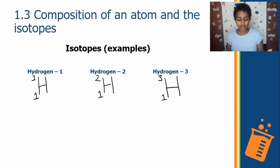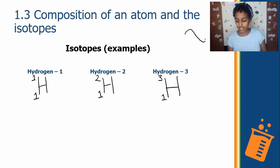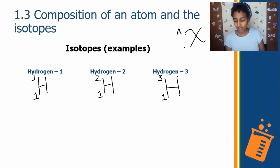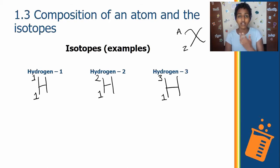For any element X, you always write the mass number at the top left and the atomic number at the bottom left. It's just shorthand to quickly identify the mass number and atomic number of any element.